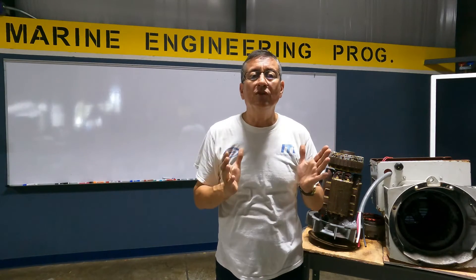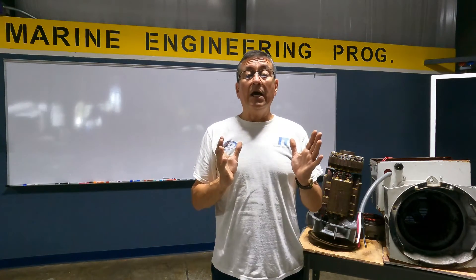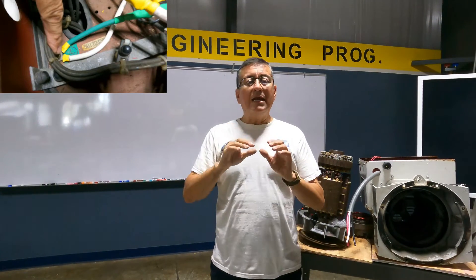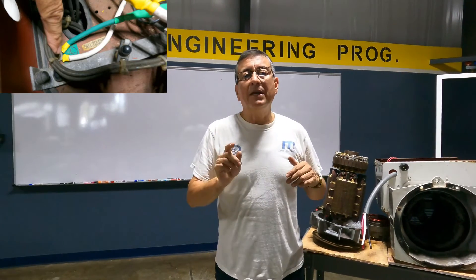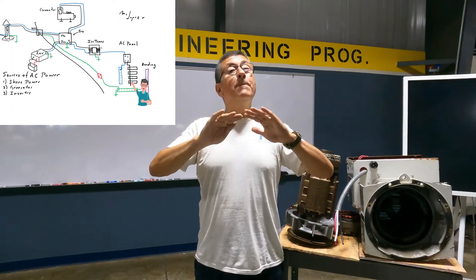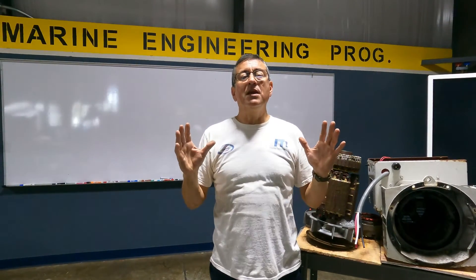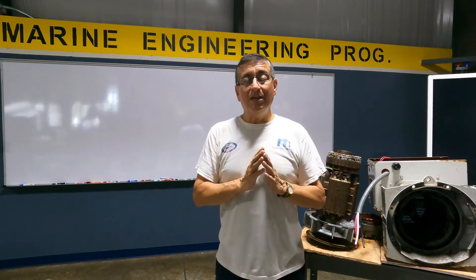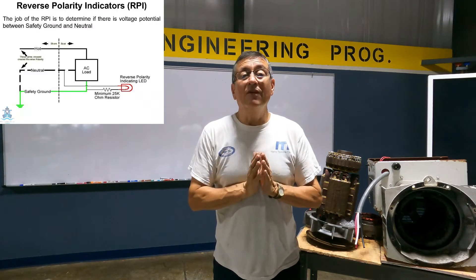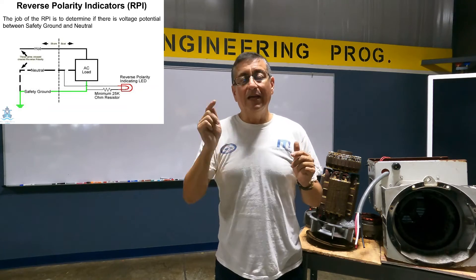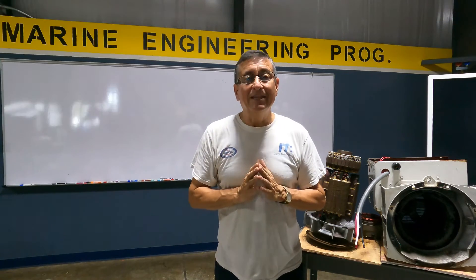This is the function of the ground. It's completely different and should be separated — only connected at the source of power. After that, they are completely separated. The neutral bus bar and the ground bus bar should be completely separated. Never put them together. If not, you can destroy the boat. Later, in other episodes, I am going to explain what is the meaning of reverse polarity and what happens if the neutral bus bar and the ground bus bar are connected together.